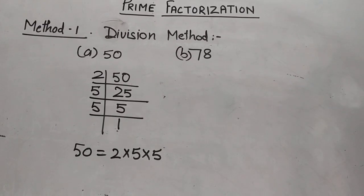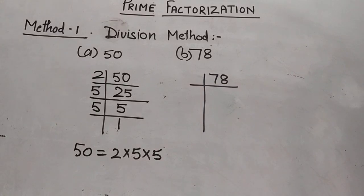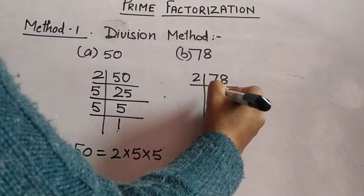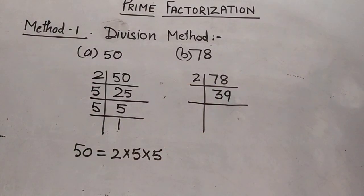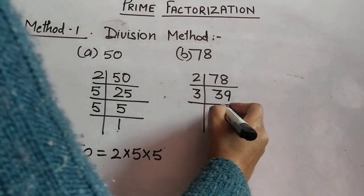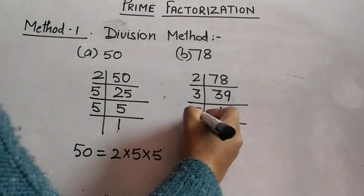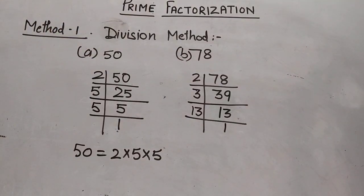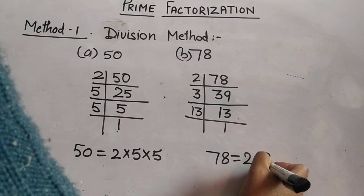One more example: find the prime factorization of 78. Since 78 is an even number, we divide it by 2. 78 divided by 2 is 39. Now 39 is an odd number, so we cannot divide it by 2. We go to 3. We can divide 39 by 3 exactly: 39 ÷ 3 = 13. Since 13 is itself a prime number, we divide 13 by 13 and get 1. So the prime factors of 78 are 2 × 3 × 13.